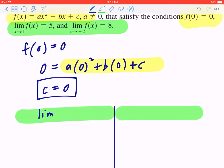So in the first column, I'm going to write down the fact that the limit of f of x as x is approaching one equals five. In the second column, the limit of f of x as x is approaching negative two, that equals eight.